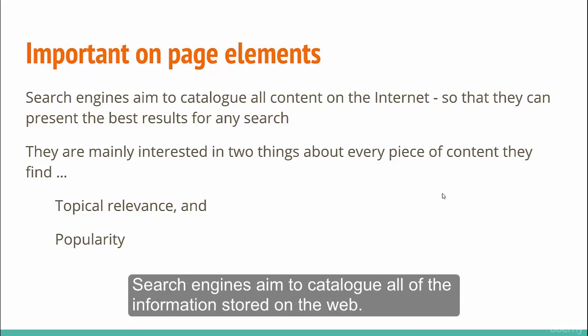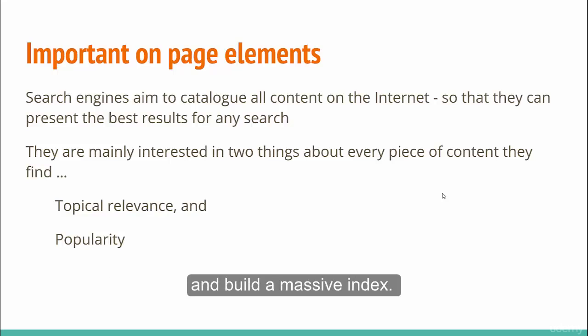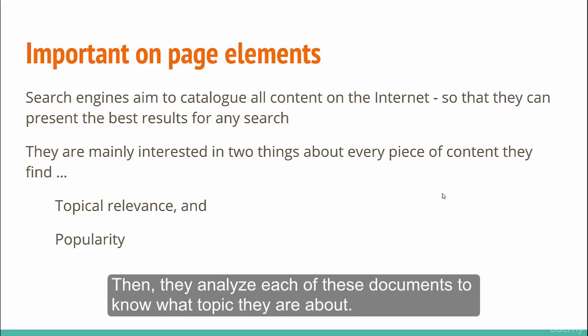Search engines aim to catalog all of the information stored on the web. To do this, they use bots to fetch each page or document on the internet and build a massive index. Then, they analyze each of these documents to know what topic they are about.